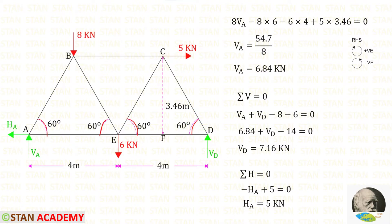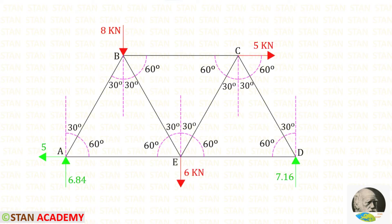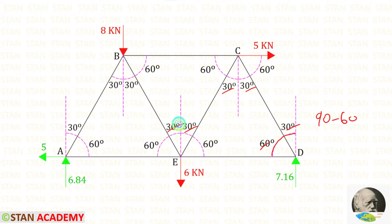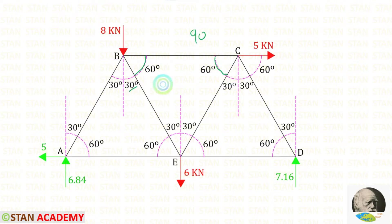In this truss, the angles at points A, E, and D are given. Using these angles, we can find the other angles. Since the total angle is 90°, 90 − 60 = 30°. The remaining unmarked angles throughout the truss are therefore 30°. Similarly, 90 − 30 = 60°, giving us the other set of angles.